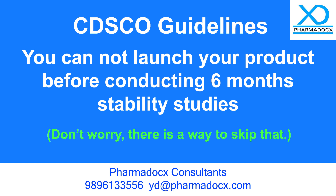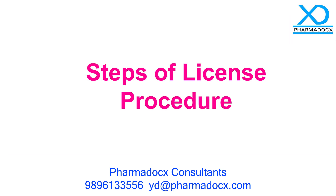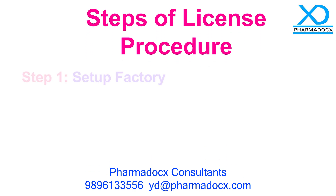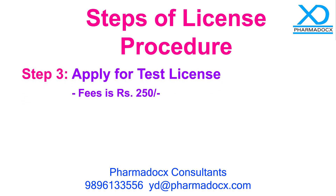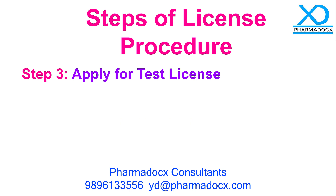The various steps involved in the license procedure are as follows. Step one: set up factory. Step two: appoint technical staff. Step three: apply for a test license. Its fee is rupees 250 for any number of items applied at once, and it is applied on Form 30. An inspection will then take place; the inspection team consists of a CDSCO inspector, your local inspector, and your state assistant drugs controller.